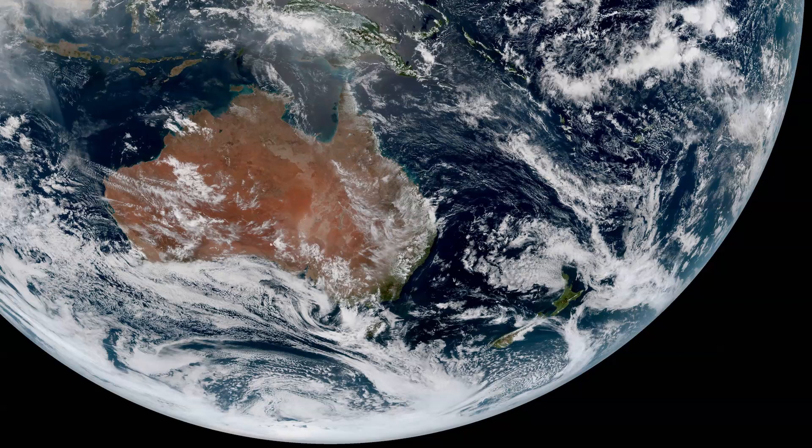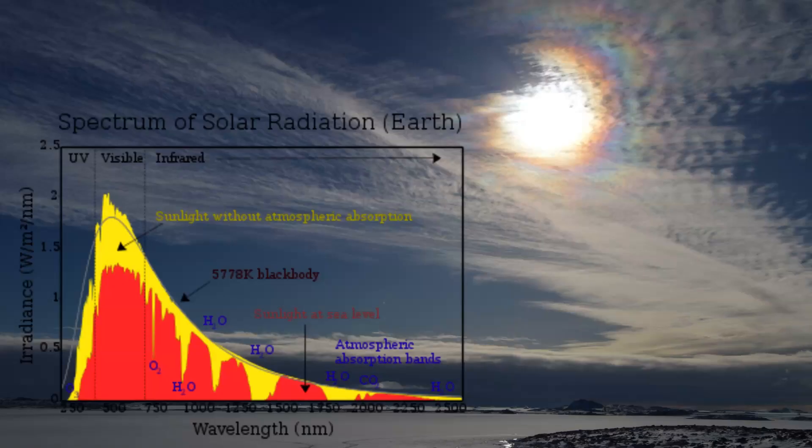Hot things radiate out energy. Physicists call this black body radiation. You know how something glows blue or red hot? Like the sun has got a peak of its energy in the visible spectrum.